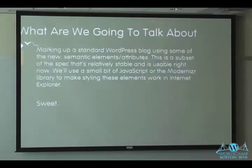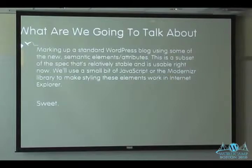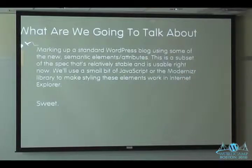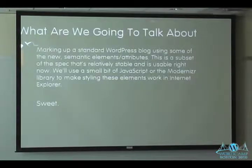We're going to talk about marking up a standard WordPress blog using some of the new semantic elements and attributes. This is a subset of the specification that's relatively stable and usable right now. We're going to use a small bit of JavaScript — the Modernizer library — to make styling these new elements work in Internet Explorer. IE just doesn't handle unknown elements the same way good browsers do. Good browsers say, 'I'll let you style it.' IE says, 'I don't know what this is, I'm going to ignore it.' This little chunk of JavaScript fixes that.